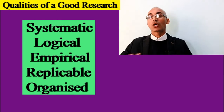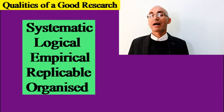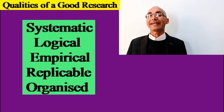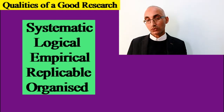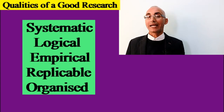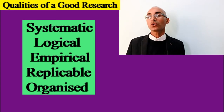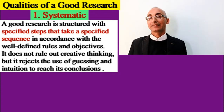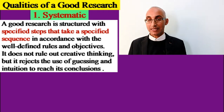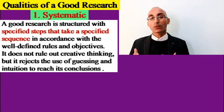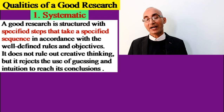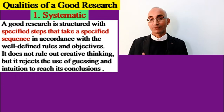In most definitions of research you will find these key terms mentioned by different scholars and educators. Let's try to identify each of them and how research should be characterized with them. First, good research is systematic — it means it is structured with specified steps, consisting of certain interrelated series of steps.